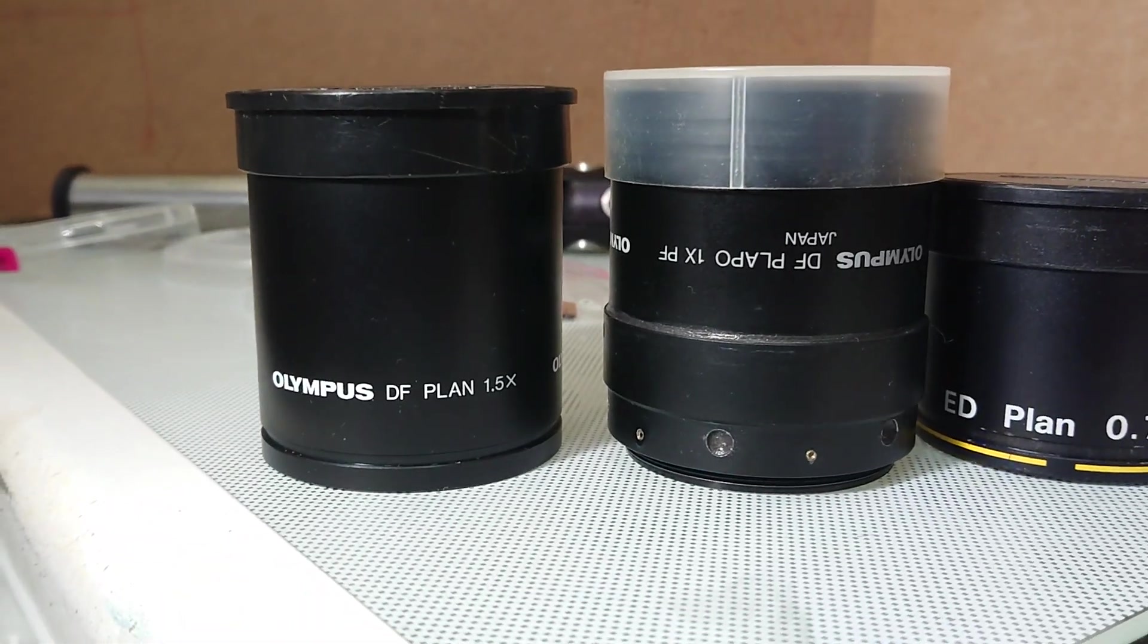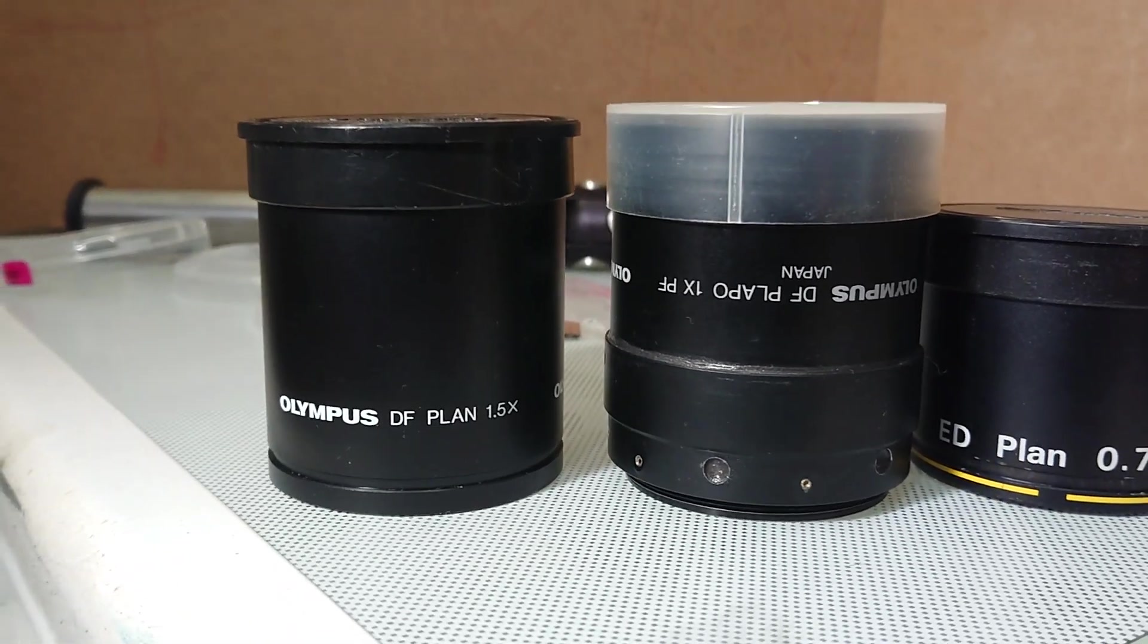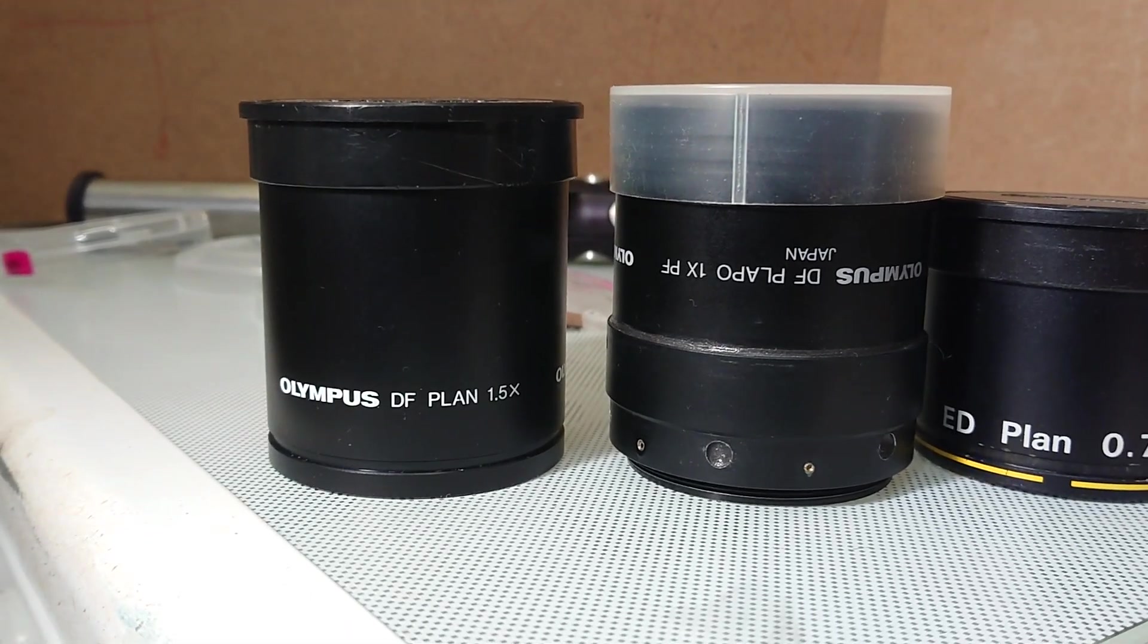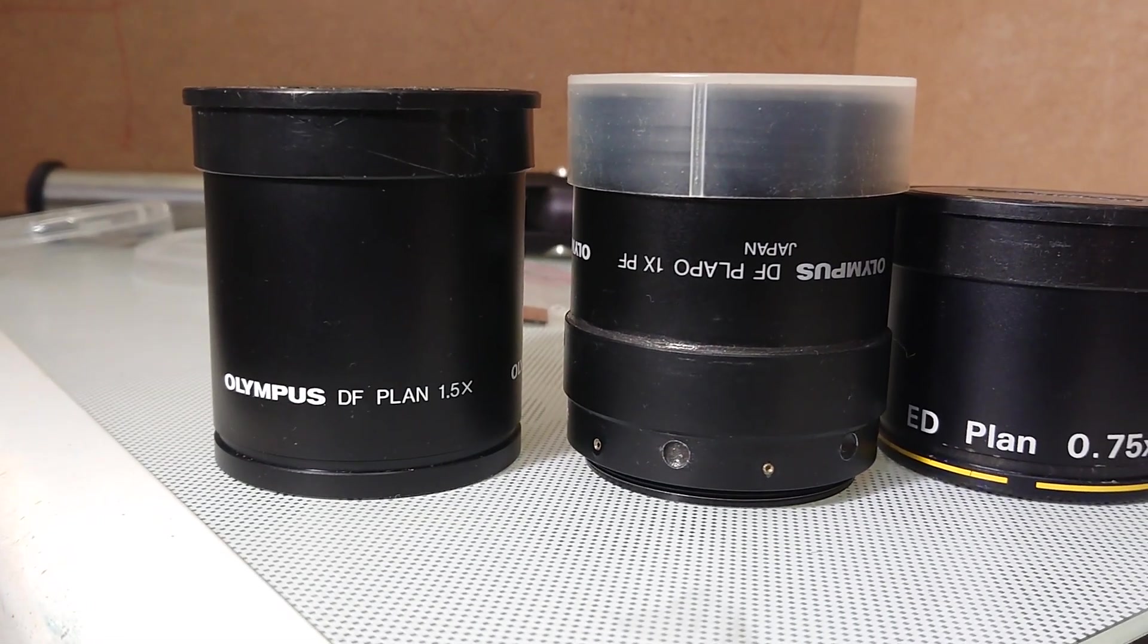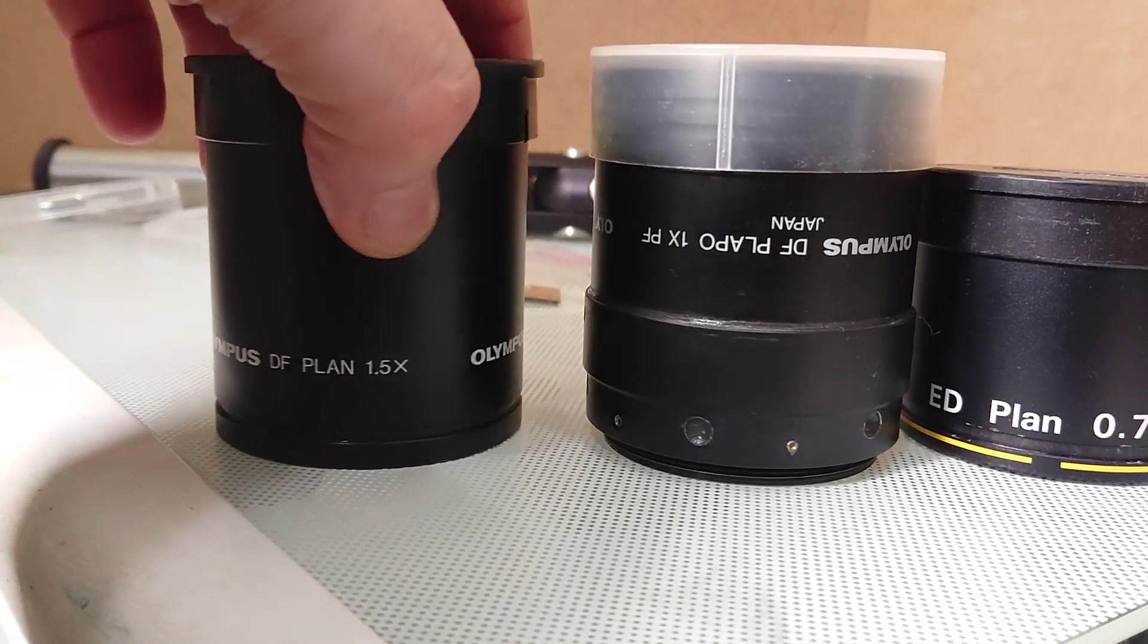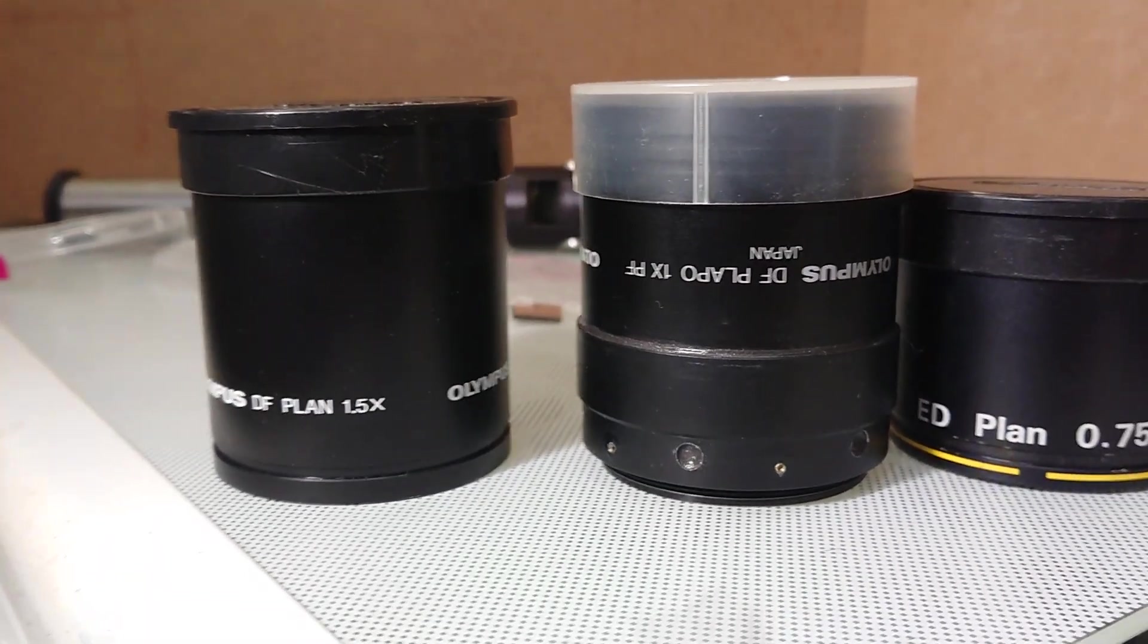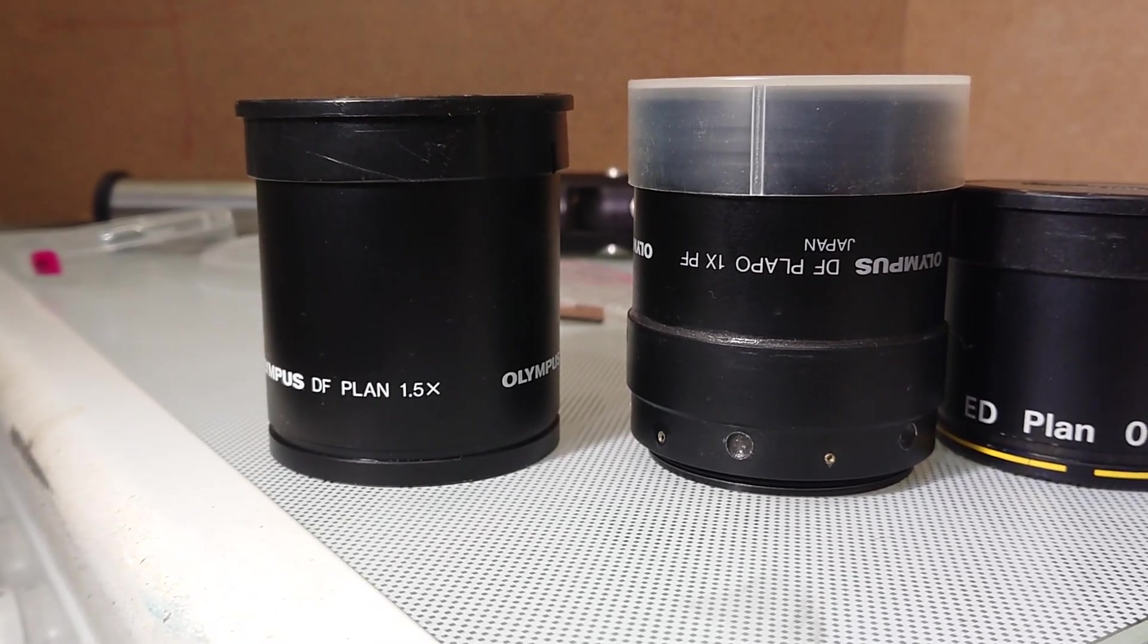The last one is still not adjusted, but when one channel works well and another not so good, we can still see how it works. Olympus DFP-PLAN 1.5x objective with working distance of 45 mm or something like that.